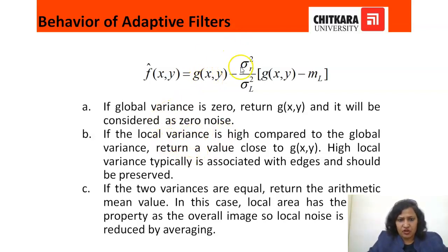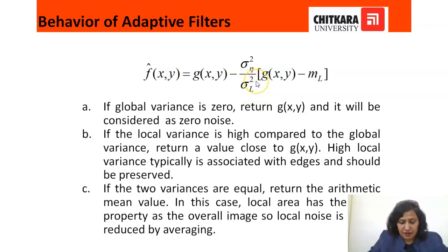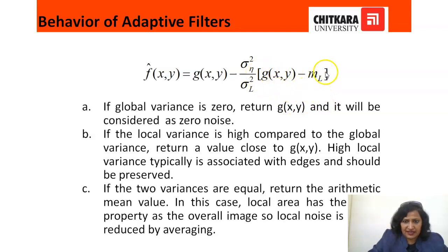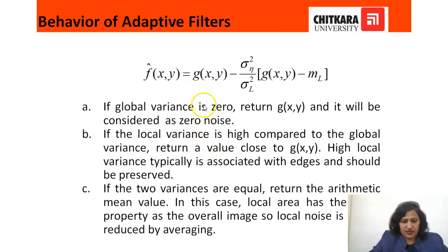Second case: if the local variance sigma_l squared is high as compared to the global variance sigma_n squared, it means that particular local window is associated with edges — some edges are there and that is not noise, so it should be preserved. Mathematically, when sigma_l squared is higher than sigma_n squared, this factor becomes very small — negligible — so the approximated F(x,y) will be equal to G(x,y). In both cases the approximated image will equal the original image G(x,y), because in the first case noise is zero and in the second case there are edges.